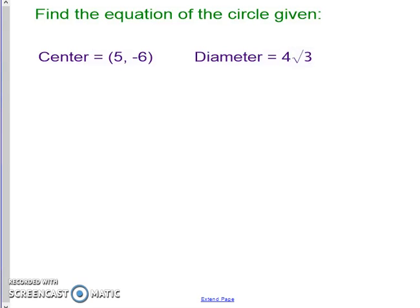Okay, now we're going to find the equation of a circle given the center 5, negative 6 and a diameter of 4 root 3.